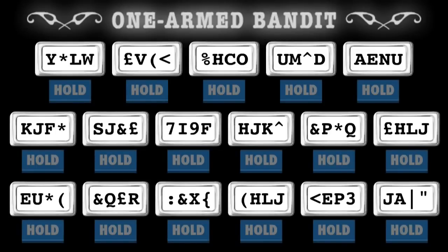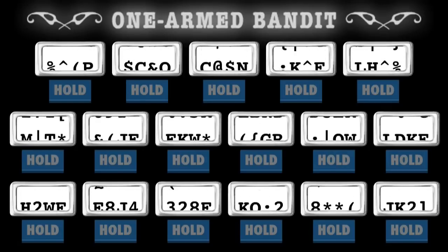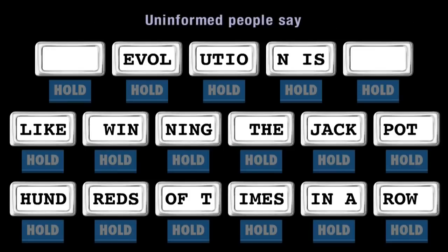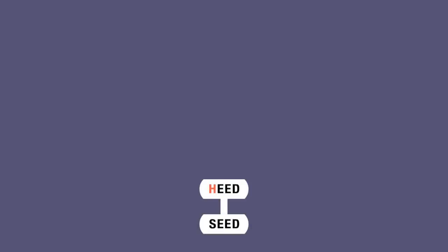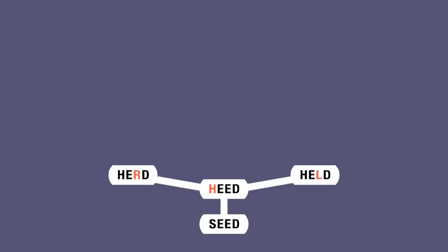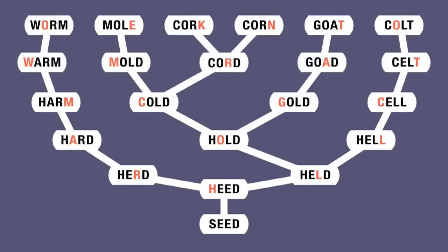People who say that evolution is all about impossibly unlikely accidents often claim that the probability of lifeforms evolving is the same as winning the jackpot on a one-armed bandit hundreds of times in a row. But miraculous accidents are the opposite of what evolution is about. If we're going to use the one-armed bandit analogy, then evolution presses the hold button on almost all symbols on every pull of the lever. Starting with a word, we only need to change one letter to turn it into a new word — repeating this process can produce words that differ dramatically from the original. Dramatic change can be achieved one small step at a time.